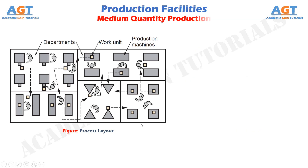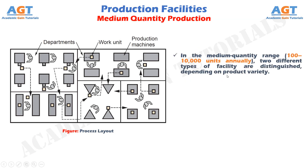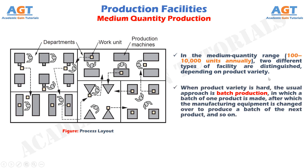In the medium quantity range of 100 to 10,000 units annually, two different types of facility are distinguished depending on product variety. When product variety is hard, the usual approach is batch production, in which a batch of one product is made, after which the manufacturing equipment is changed over to produce a batch of the next product. The production rate of the equipment is greater than the demand rate for any single product type, so the same equipment can be shared among multiple products. The changeover between production runs takes time to change tooling and set up the machinery — this setup time is lost production time, and is a disadvantage of batch manufacturing.